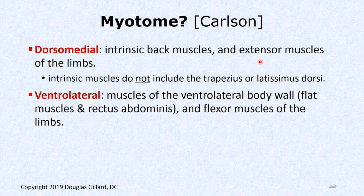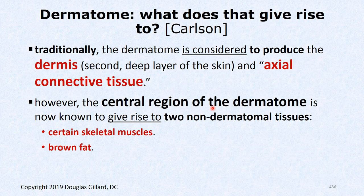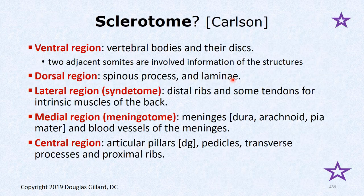What about the myotome? The dorsal medial region of the myotome forms all the intrinsic back muscles we discussed, and helps form some extensor muscles of the limbs like the triceps. The ventral medial region of the myotome gives rise to the muscles of the ventral lateral body wall — the flat muscles: the external oblique, internal oblique, and transversus abdominis — as well as the flexor muscles of the limbs, like the bicep.